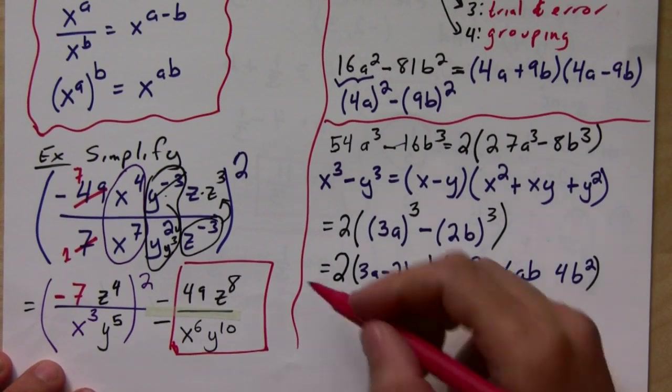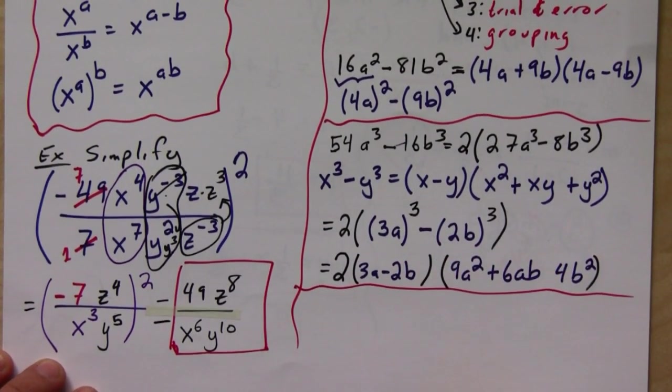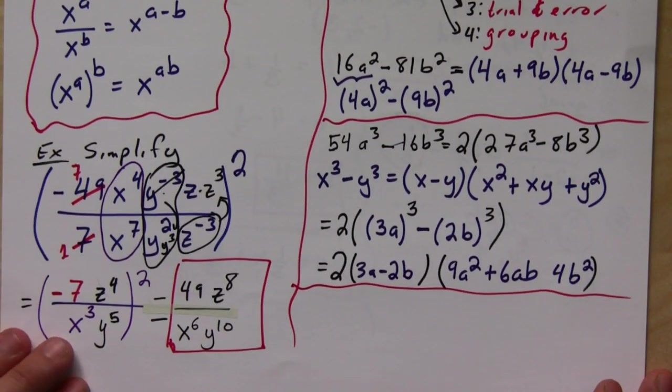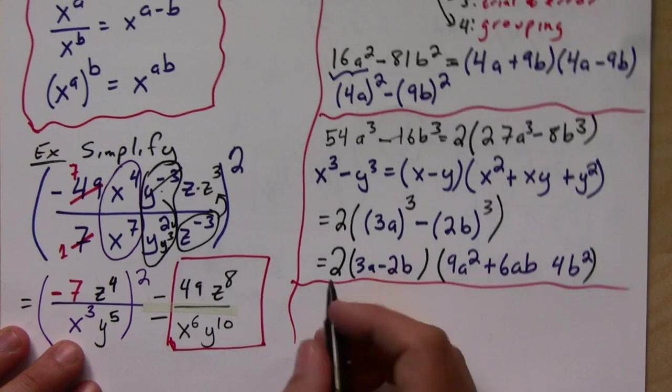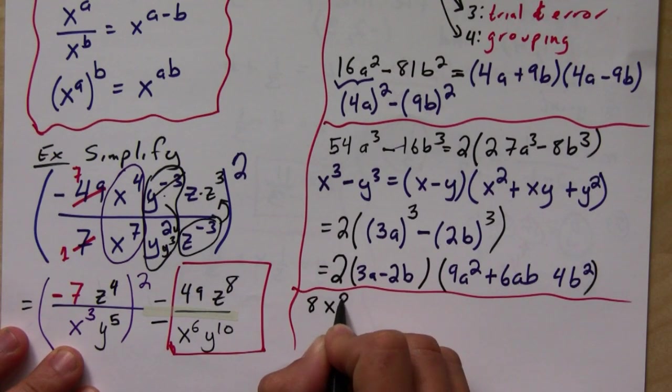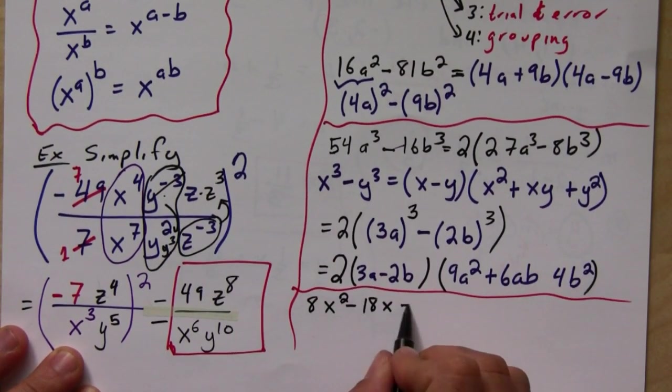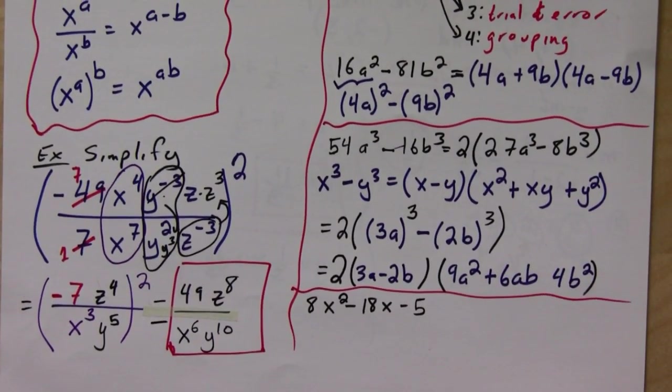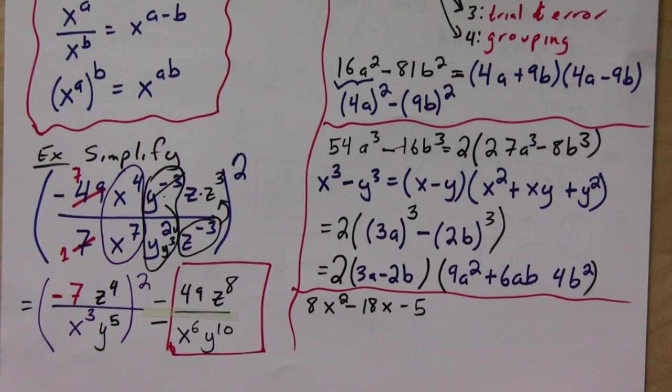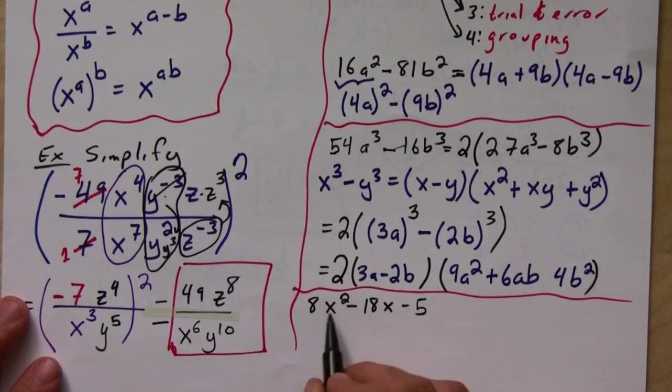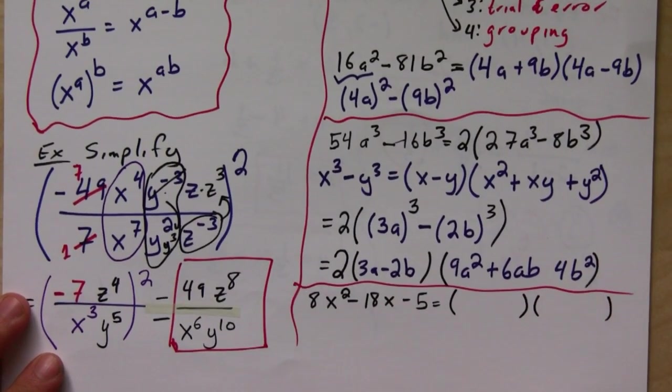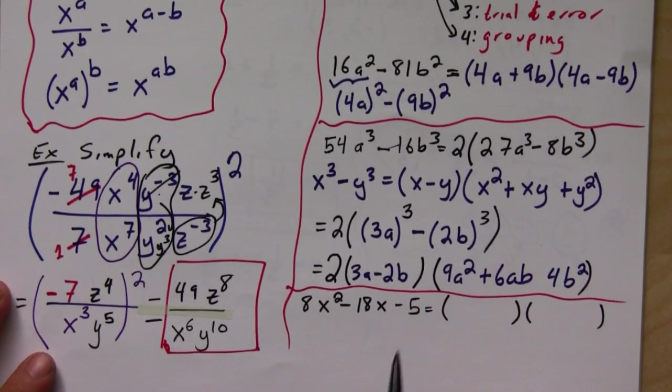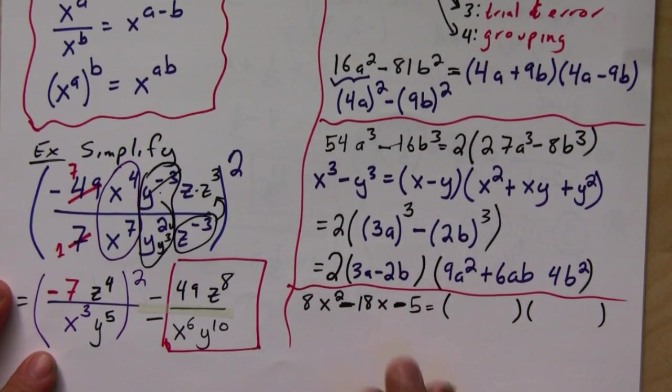Alright, so let's do another one. Let's do now one with three terms. How about something like 8x squared minus 18x minus 5? Okay, so when we have 3 terms, again, we look for the greatest common factor. In this case, there isn't one. But when we have 3 terms, the easiest way is just to do trial and error, and you can make the trial and error go easier if you notice a couple of important things.